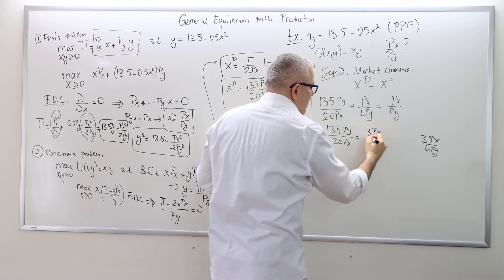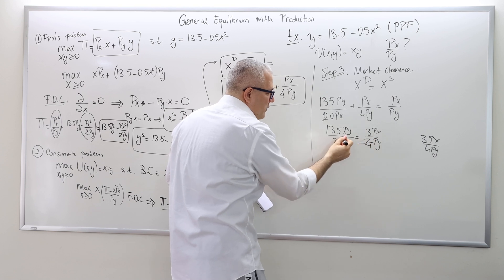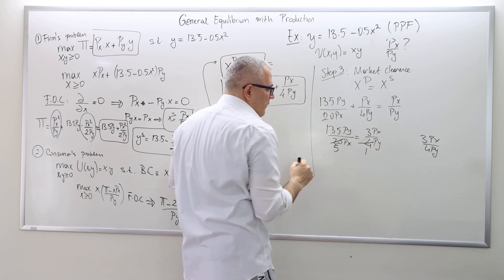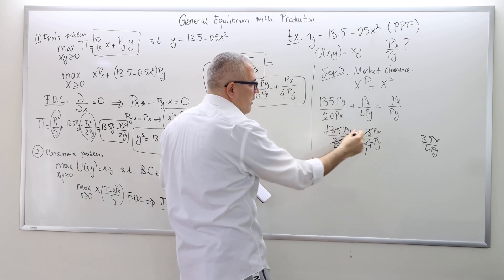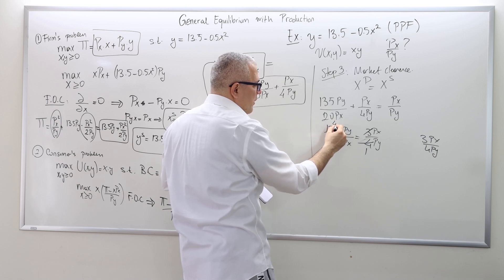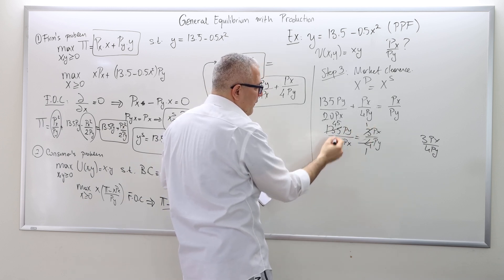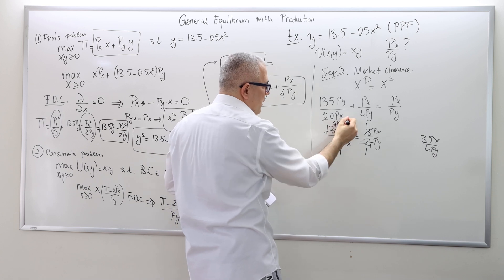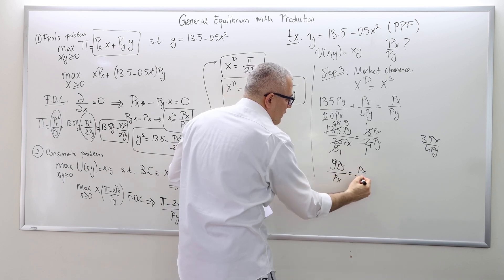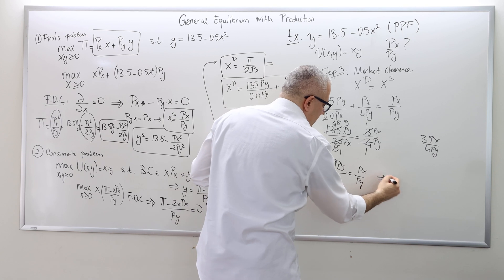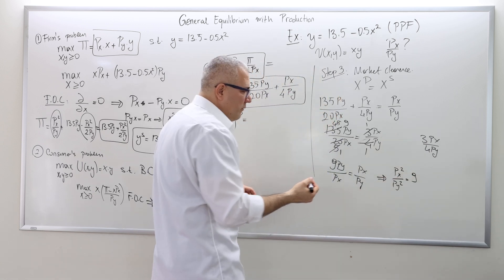So we have 135·PY/(20·PX) = 3·PX/(4·PY). Further simplification: 4 and 20 cancel to give 5, and 3 and 135 cancel. 135 divided by 3 is 45, and 45 divided by 5 is 9. So we get 9·PY/PX = PX/PY. Cross-multiplying gives PX squared divided by PY squared equals 9.